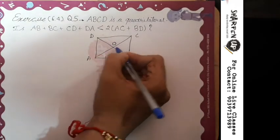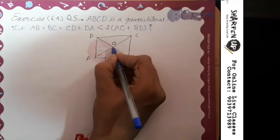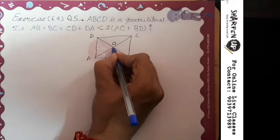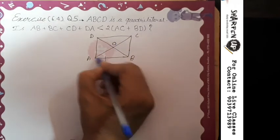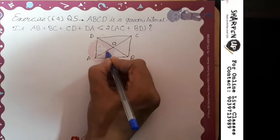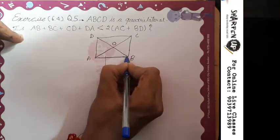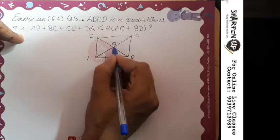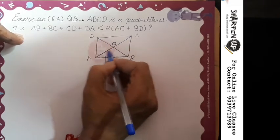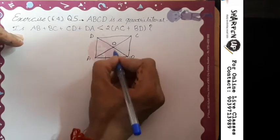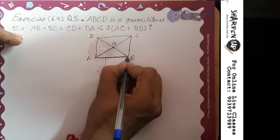From intersection point O, we can form four triangles: OAB, OBC, OCD, and ODA. Let's start with each triangle.